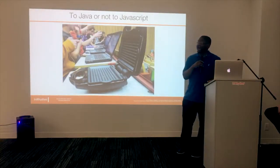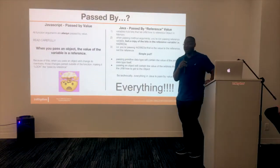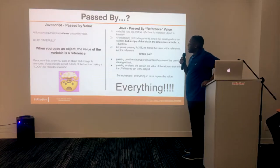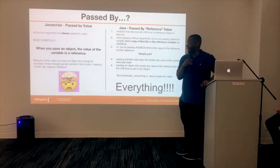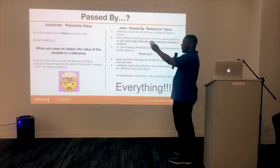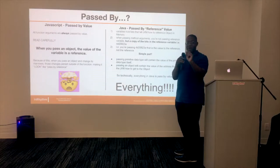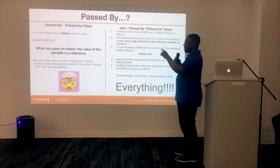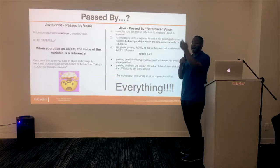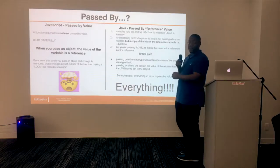Pass by value or pass by reference — the long debate. Sorry to bust anyone's bubble, but everything is passed by value. In JavaScript, all function arguments are always passed by value. When you pass an object, the value of the variable is the reference. Because of this, when you pass an object and change the memory, those changes persist outside the function, making it look like it's passed by reference.